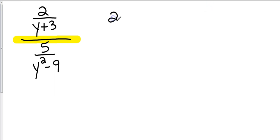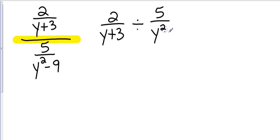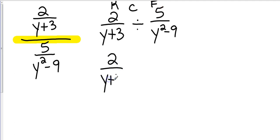We're going to have 2 over y plus 3 divided by 5 over y squared minus 9. Now some of you are probably chomping at the bit already — you see that y squared minus 9, you know we're going to be able to factor that. But let's go ahead and keep with our order: keep it, change it, flip it. So 2 over y plus 3 times y squared minus 9 all over 5.